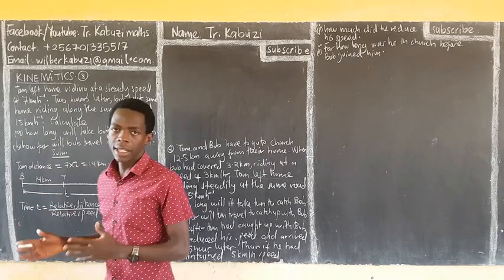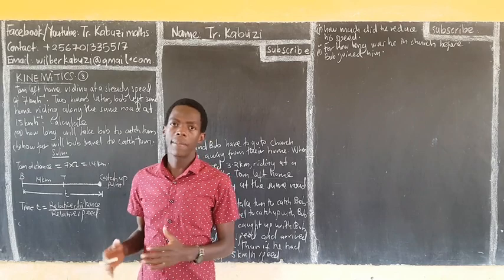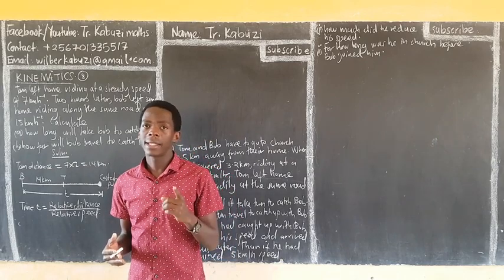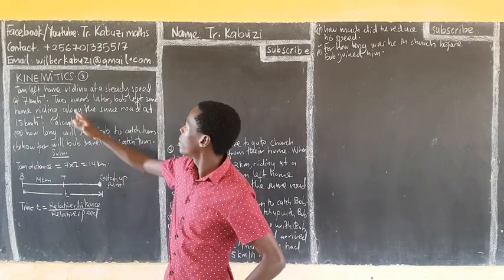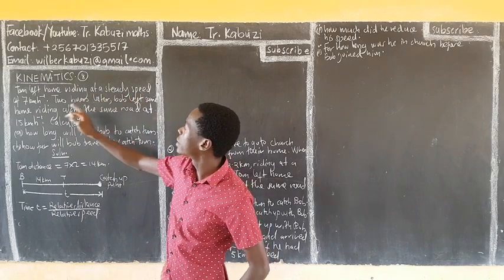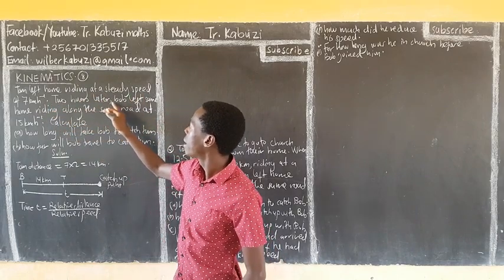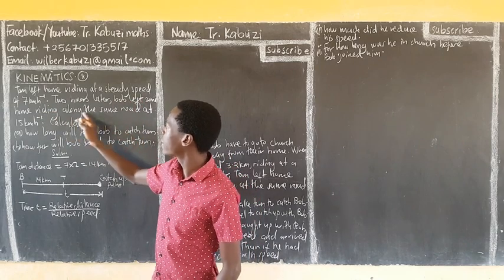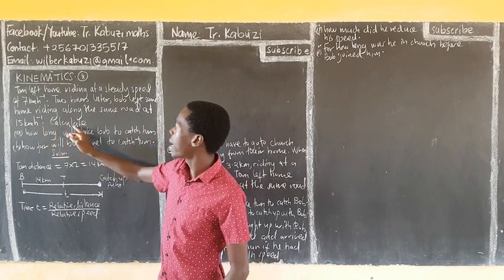Let us see this question — these ones are going to be a little lengthy, but please keep up. This one says Tom left home riding at a speed of 7 km per hour. Two hours later, Bob left the same home riding along the same road at 10 km per hour.